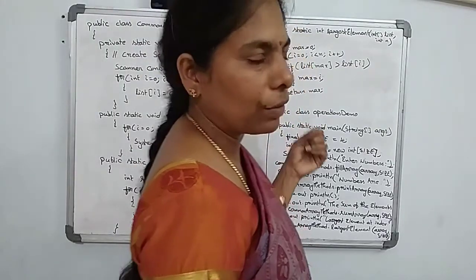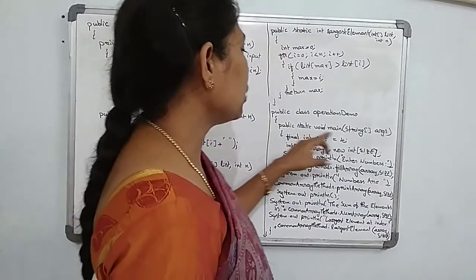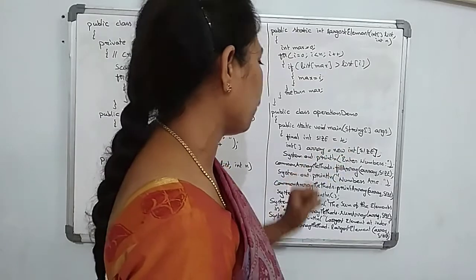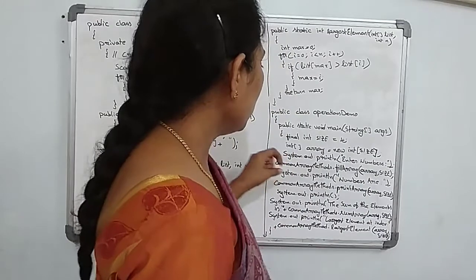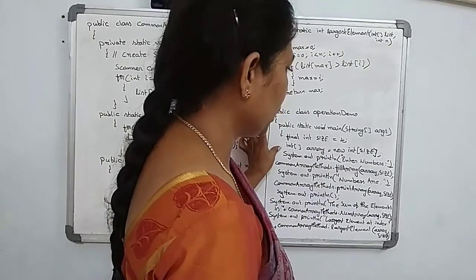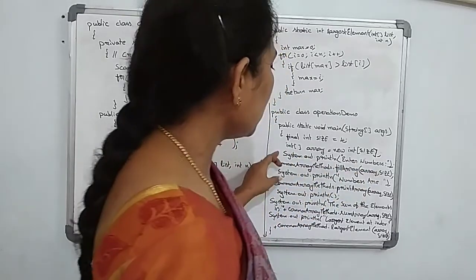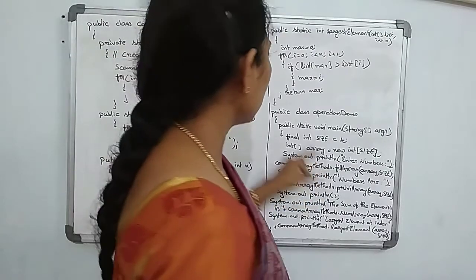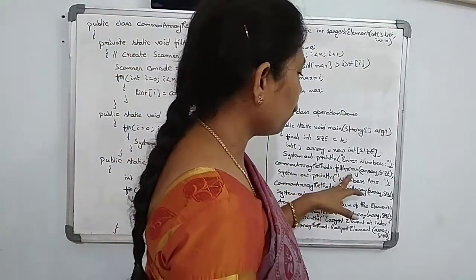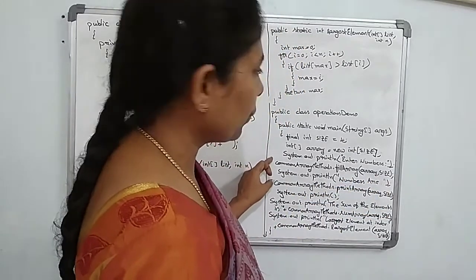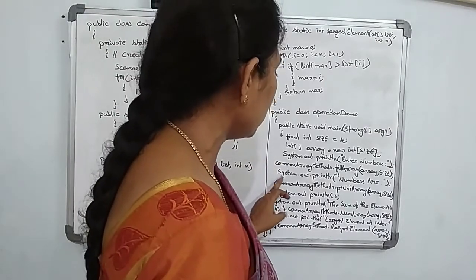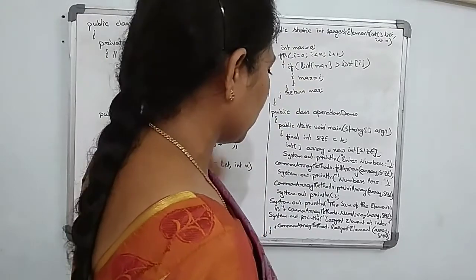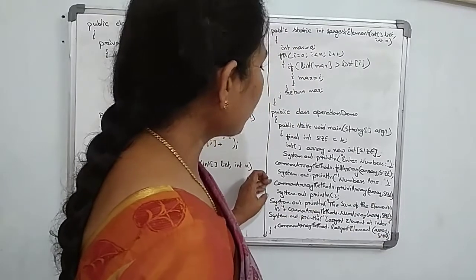Now the main method: public class OperationDemo, public static void main(String[] args). final int size = 4; int[] array = new int[size] — declaring and creating the array. To read elements, we call CommonArrayMethods.fillArray(array, size). To print elements, we call CommonArrayMethods.printArray(array, size), which prints the elements one after another.